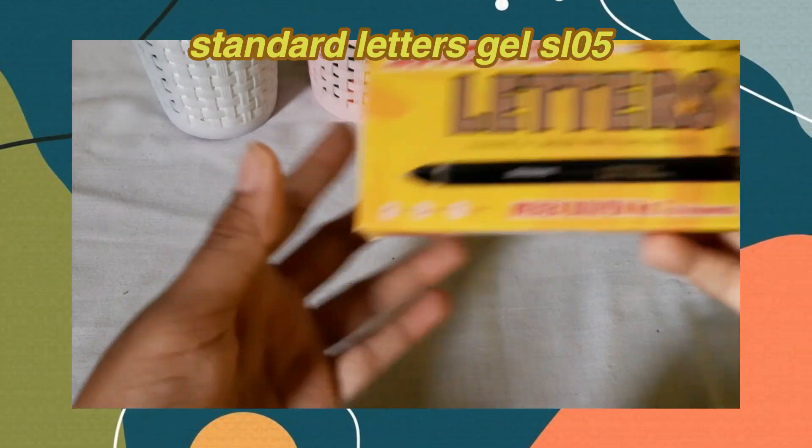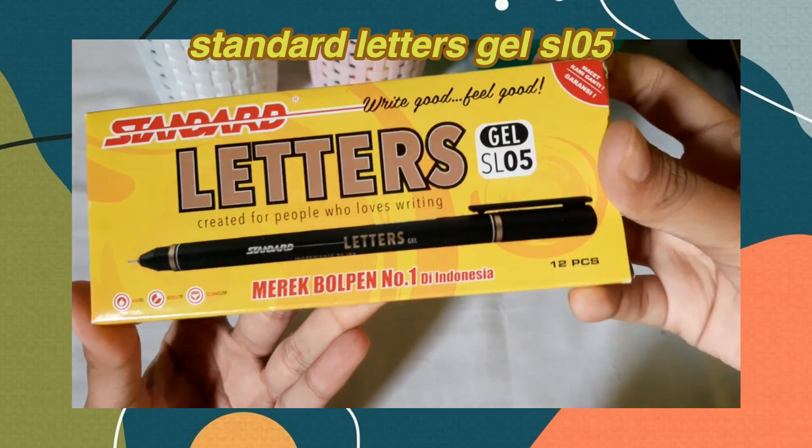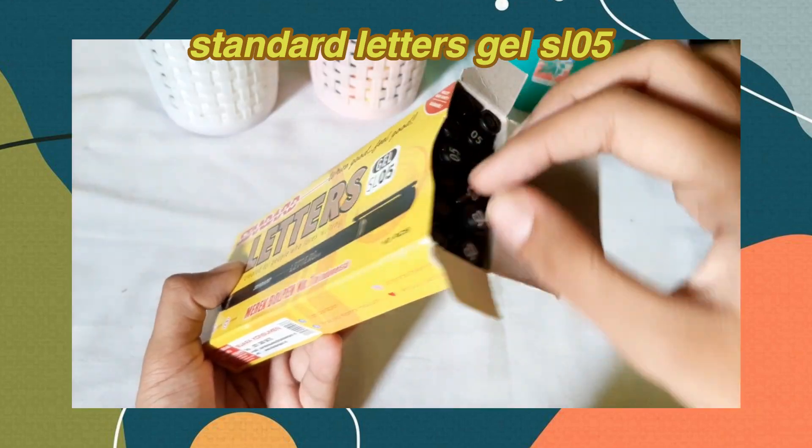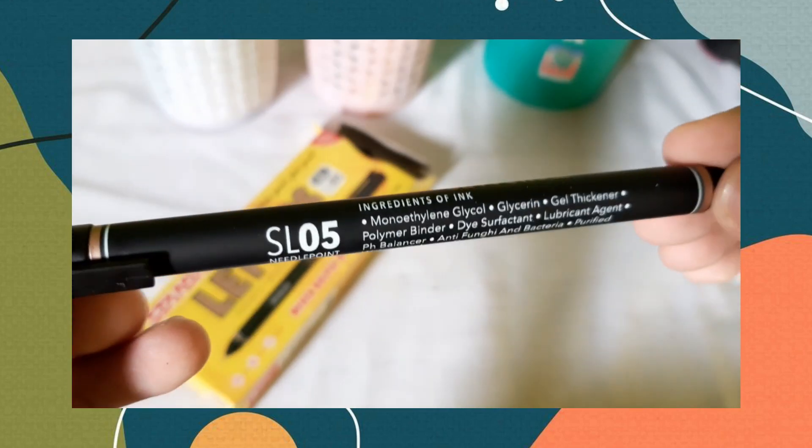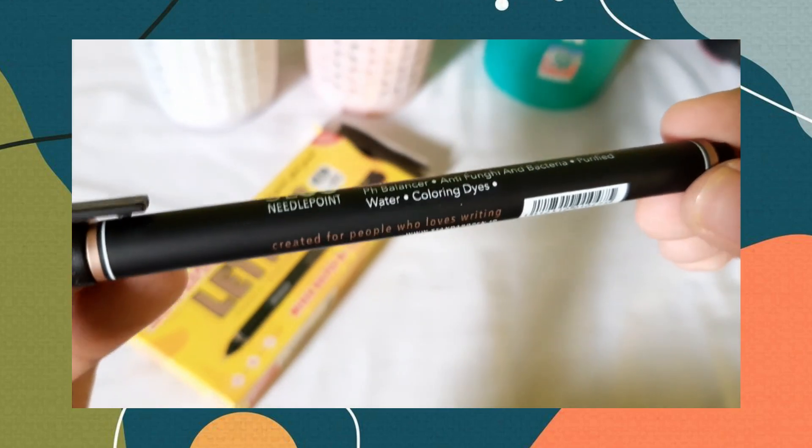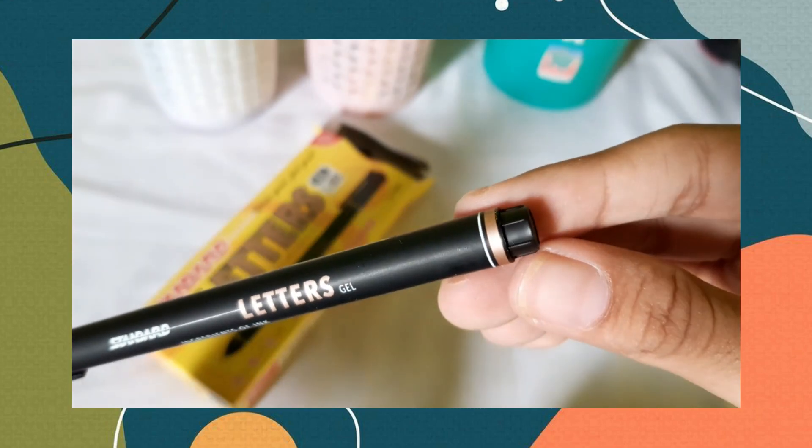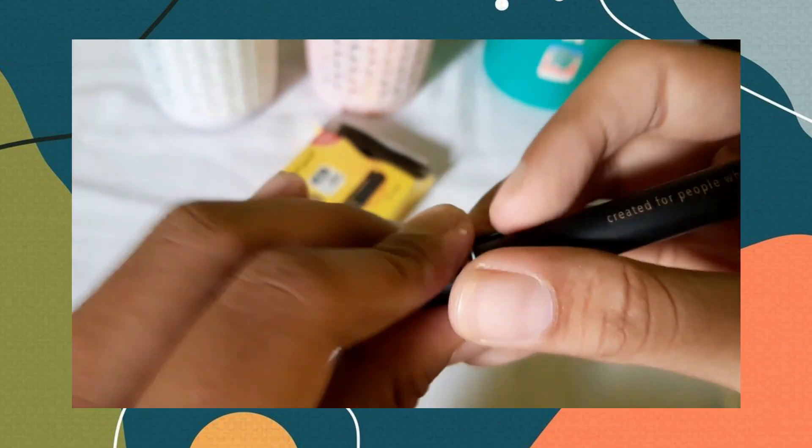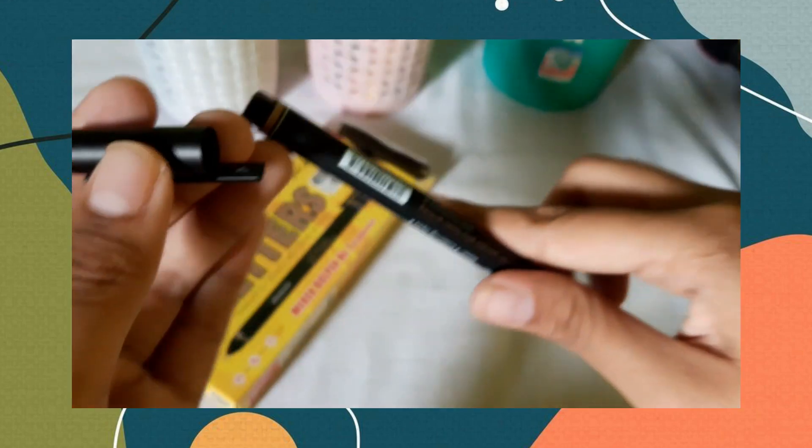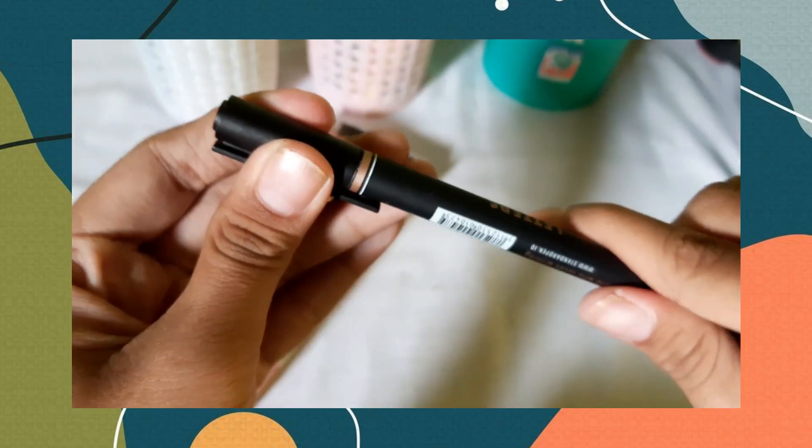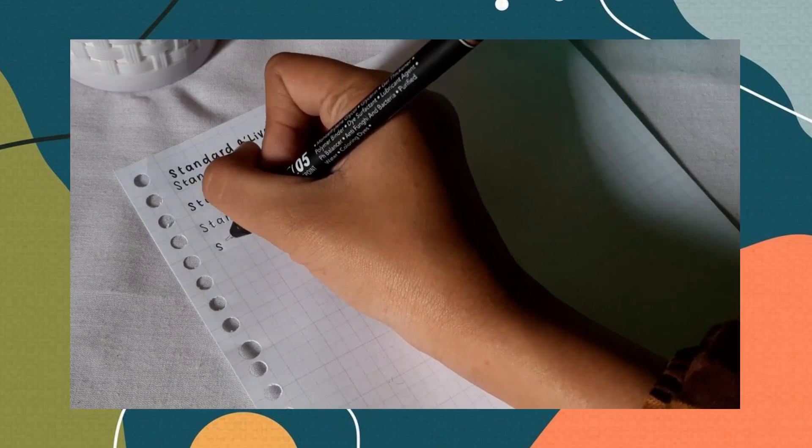Selanjutnya, Standard Letters Gel SL 0.5. Oh iya, biar aku gak usah ngomong-ngomong terus, jadi setiap pack pada produk Standard Pen itu isinya ada 12 pieces. Jadi ini tuh pulpen gel dengan mata pen ukuran 5mm. Aku suka banget sama desainnya, simple tapi ada kesan mewahnya gitu. Oh iya, di ujung pulpennya ini ada spot buat naruh tutup pulpen kalian supaya gak gampang hilang.